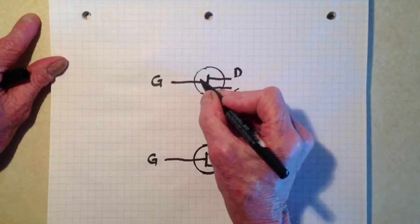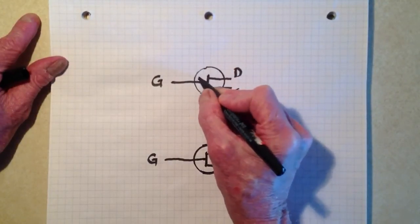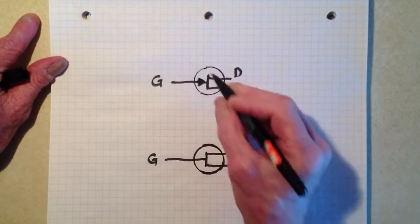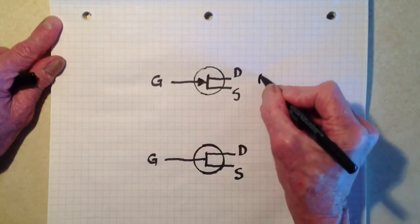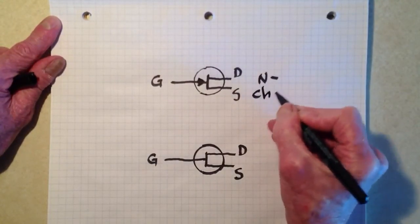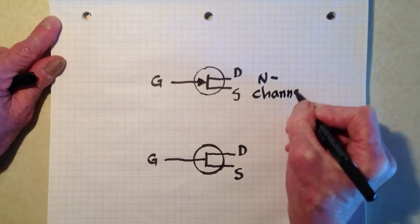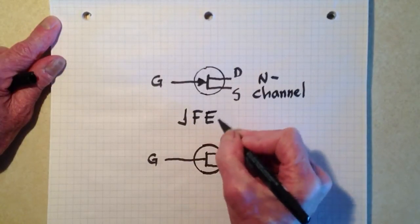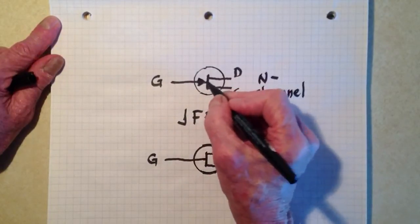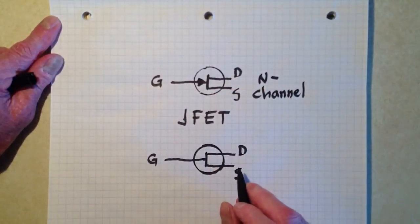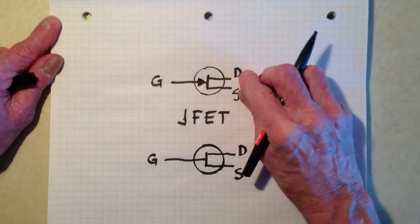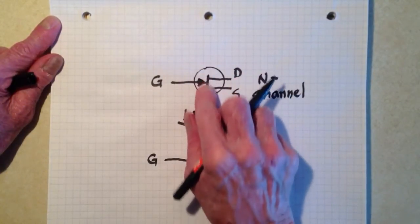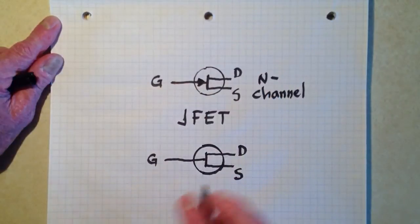If you see an arrow pointing inward, then this is called an N-channel junction field effect transistor. The word junction, of course, comes from that junction between the gate and the channel, which goes between the source and the drain. That's this N-type material here, and the gate is P-type.